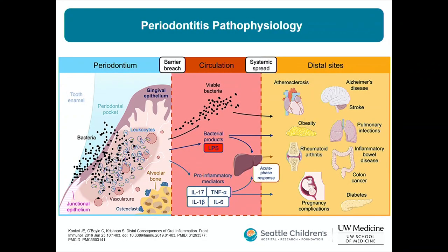The space between the tooth and gum tissue leads to inflammation, which causes vascular engorgement and ultimately leads to bacteremia — bacteria getting into the blood and traveling to the rest of the body. There can also be localized inflammation where inflammatory mediators lead to systemic inflammation.